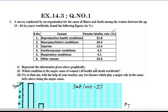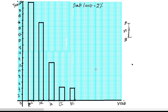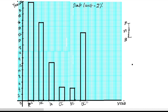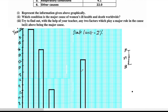Now let's plot the Other Causes category, which has a value of 22. We select one unit and draw the bar. We can also note the distance between the bars in the bar graph.